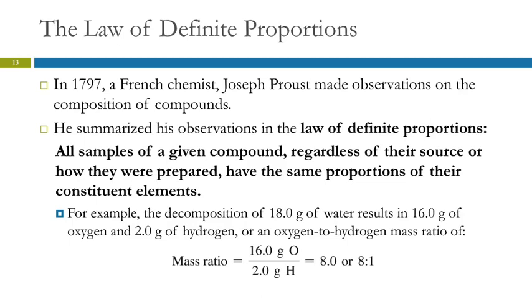Another law that led to atomic theory is the law of definite proportions. This is also back in the 1700s. French chemist Joseph Proust made observations about the composition of compounds. He summarized his observations as all the samples of a given compound, regardless of their source or how they were prepared, have the same proportions of their constituent elements. Now sometimes when you say these laws in a concise way, it doesn't necessarily make a whole lot of sense. So sometimes we need to sort of explain the law.